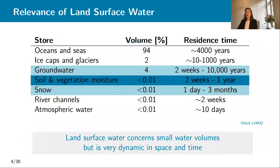Why are we now so interested in the land surface? Land surface water — that's water in the soil, vegetation and moisture and in the snow — is a really small volume fraction of the total amount of water, because most of the water is stored in oceans, seas, ice caps, glaciers. But the water in the land surface is so special because it varies a lot in space and in time, and it's in direct contact with humans. So we are directly affected by it.